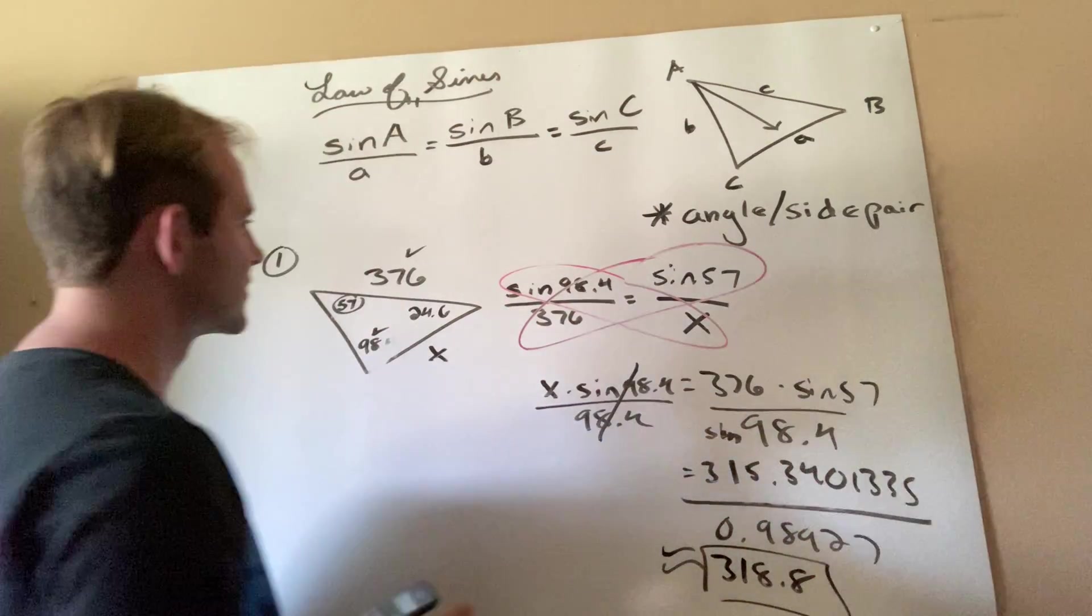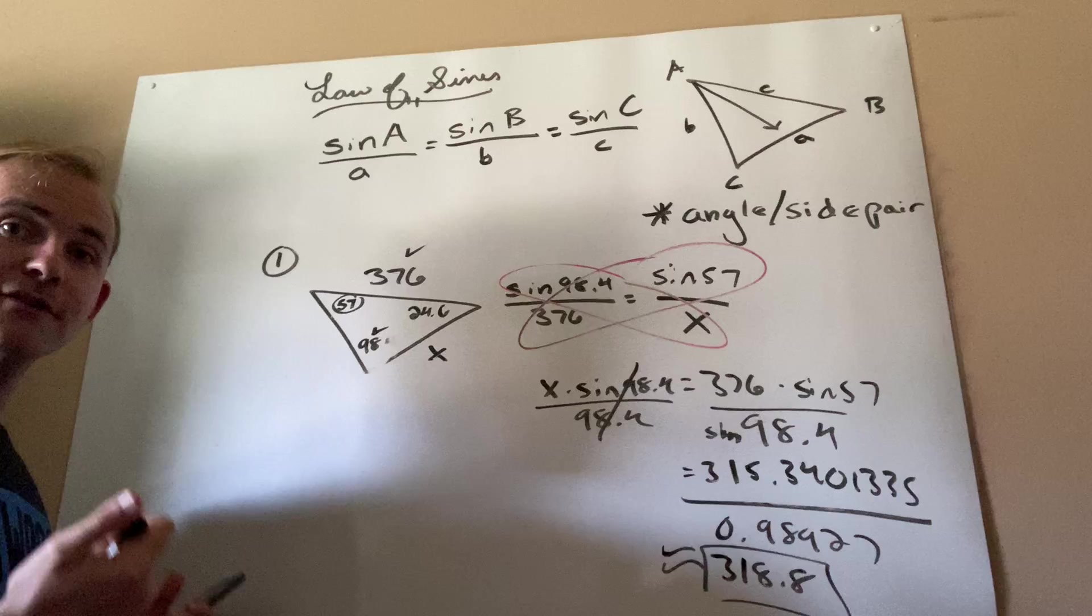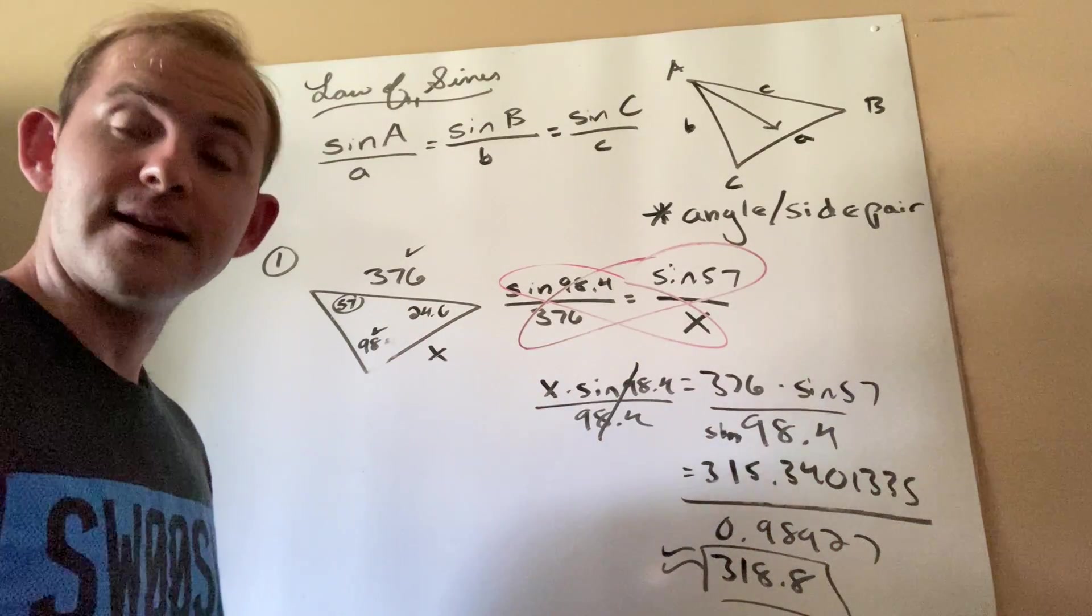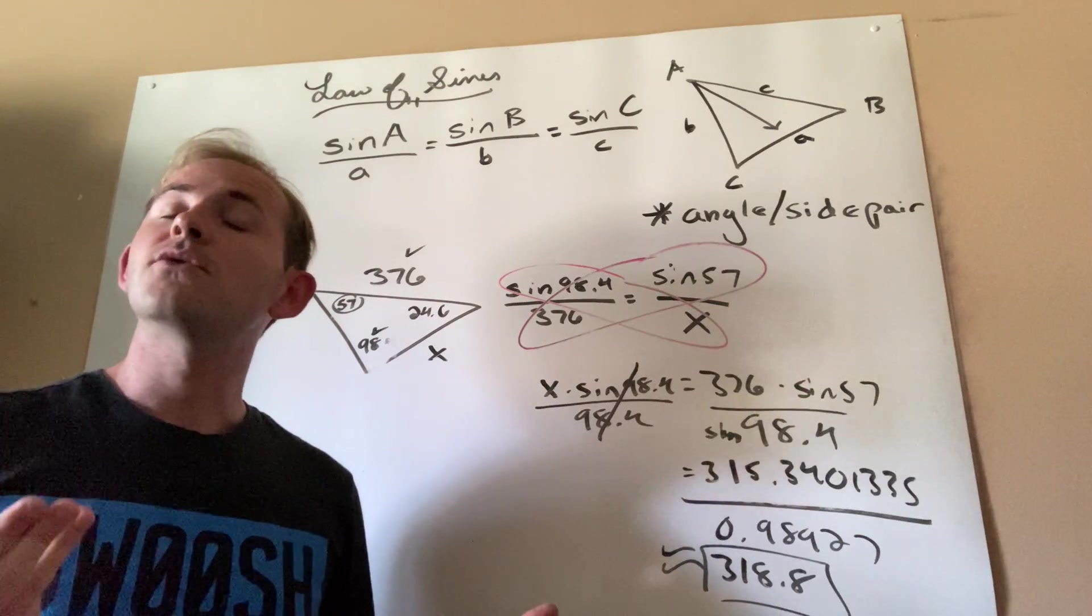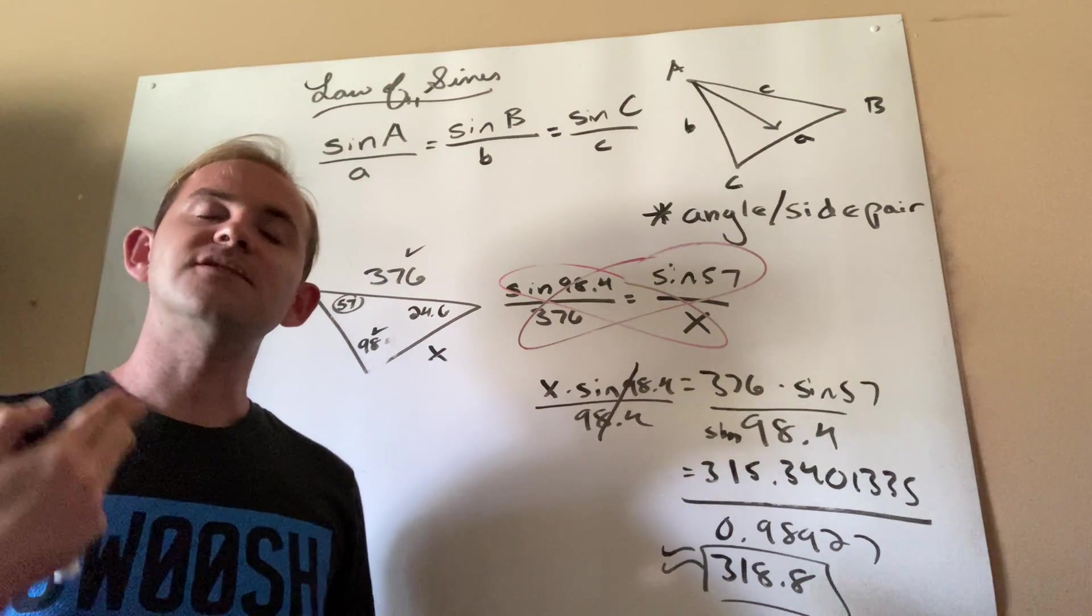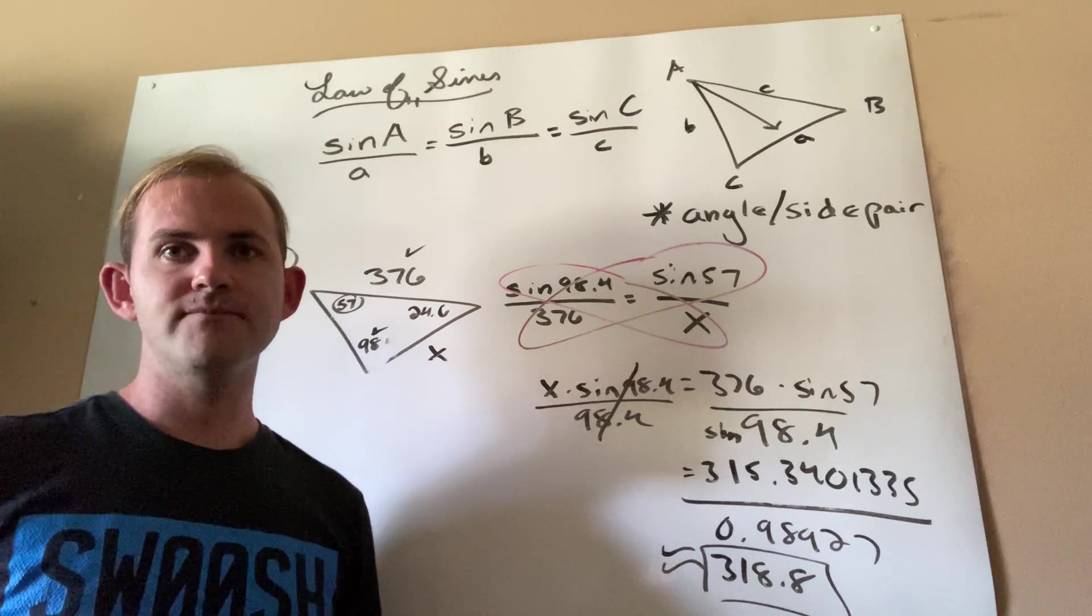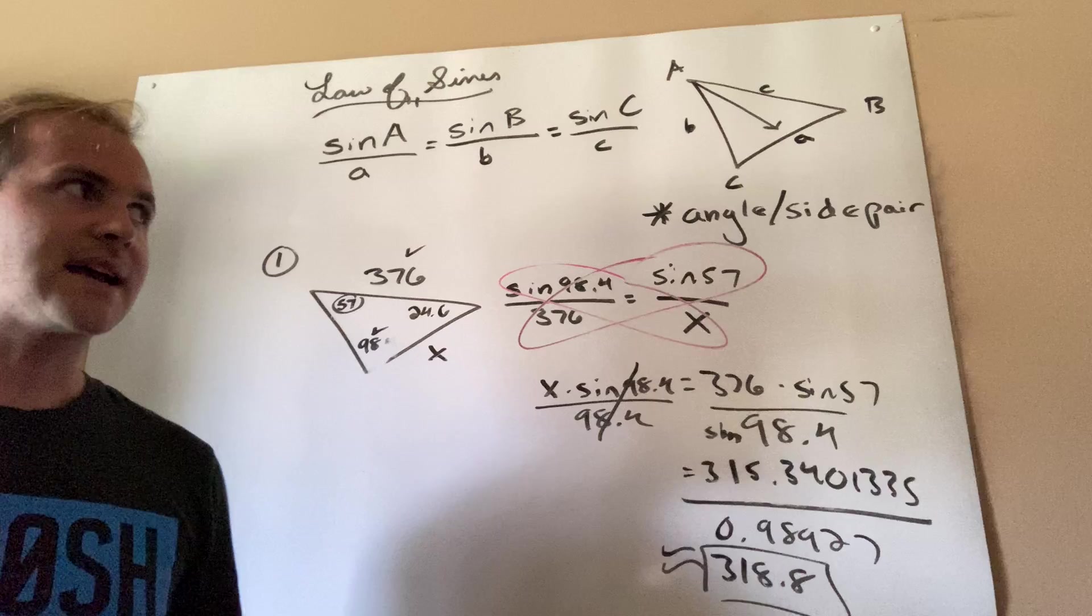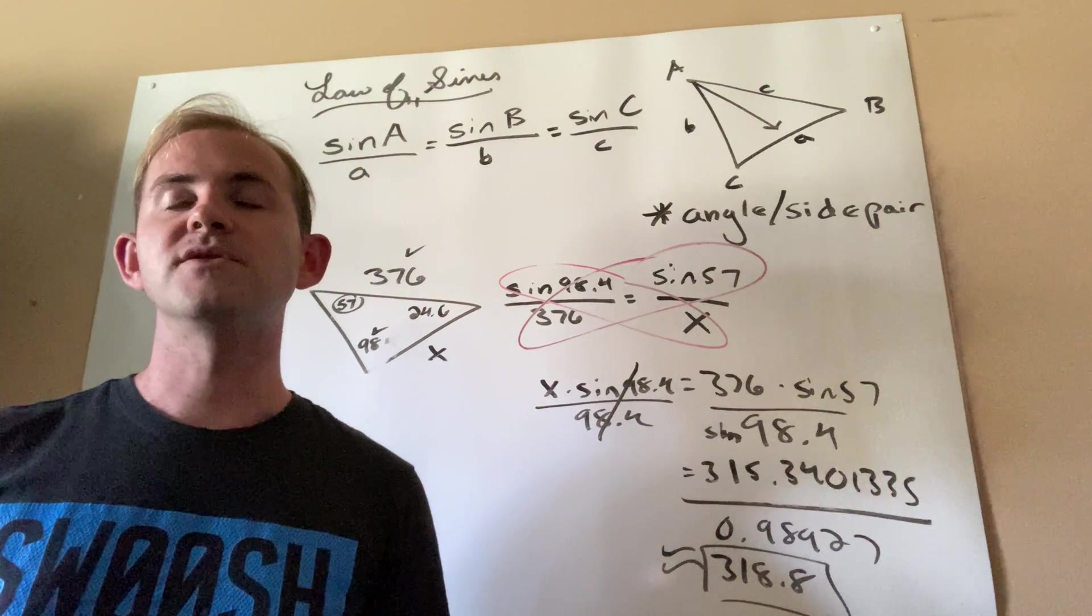So that's a super long winded way of saying that I can find unknown sides and unknown angles using the law of sines for non-right triangles. So it'll work on right triangles too, but it's just that it's very useful because I don't have to have a right triangle.